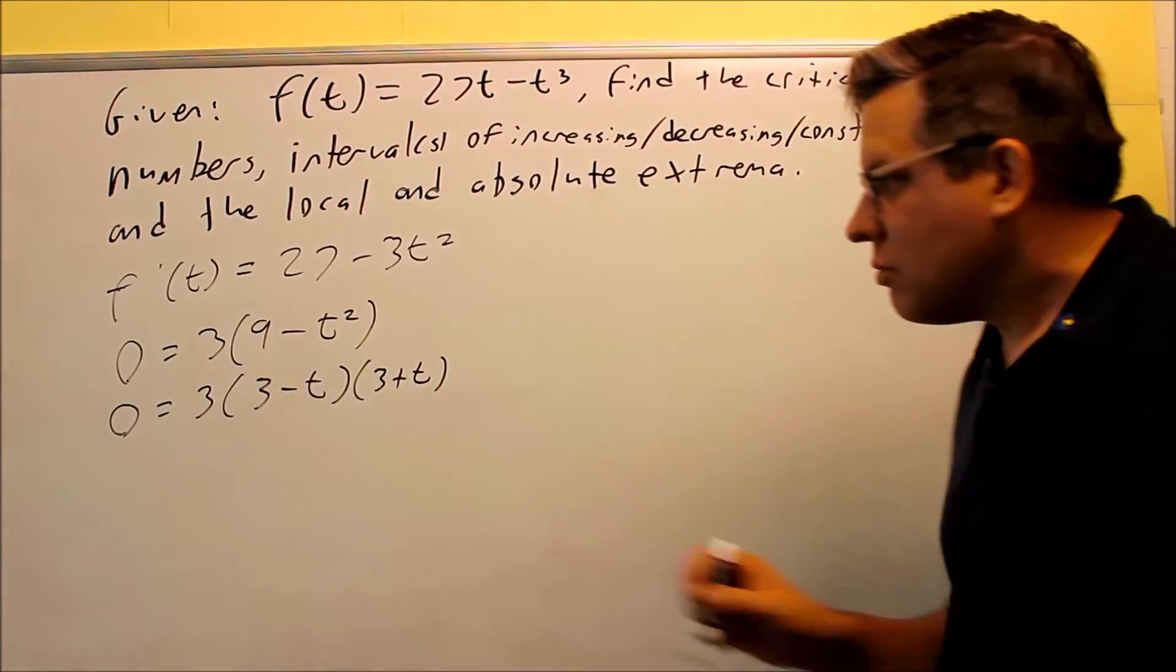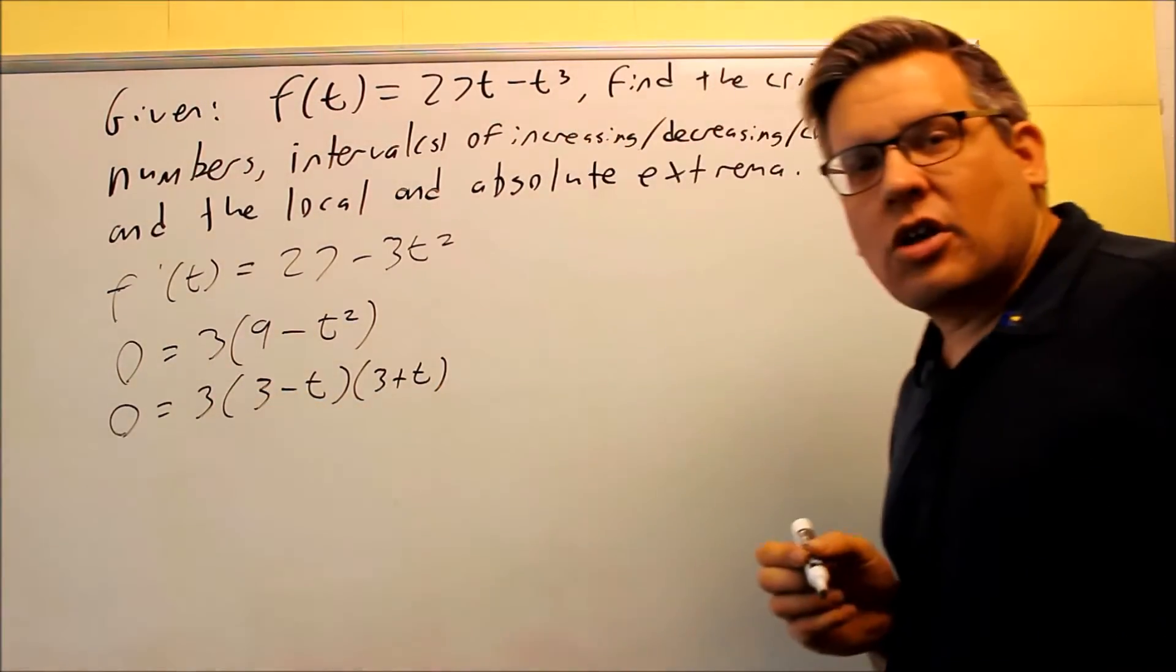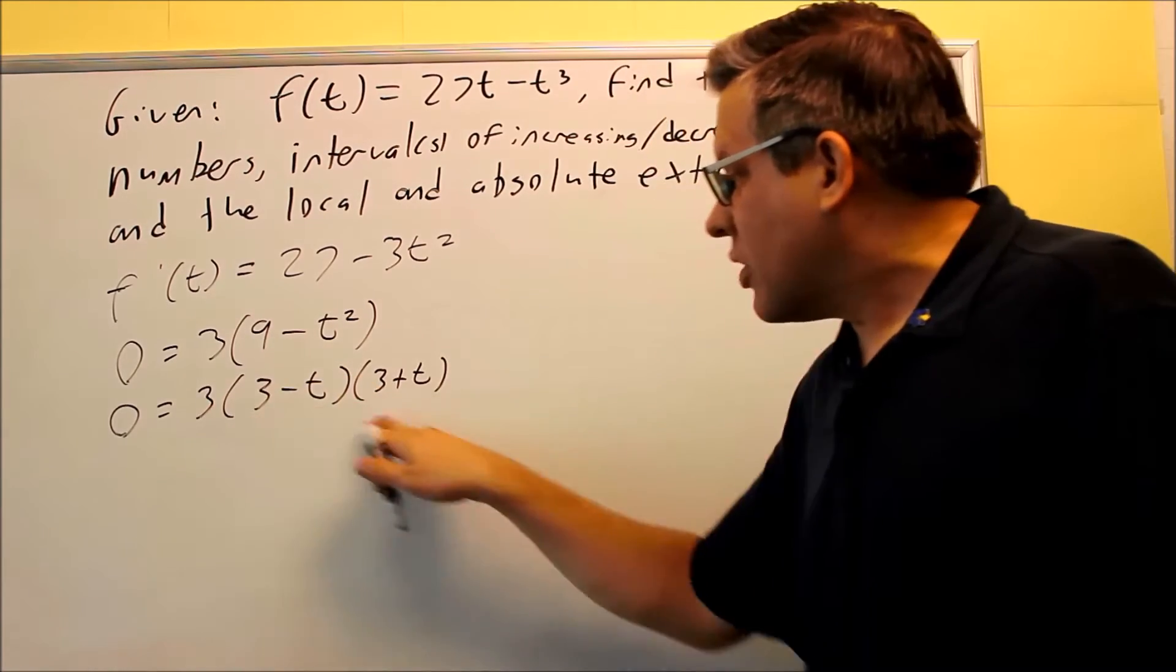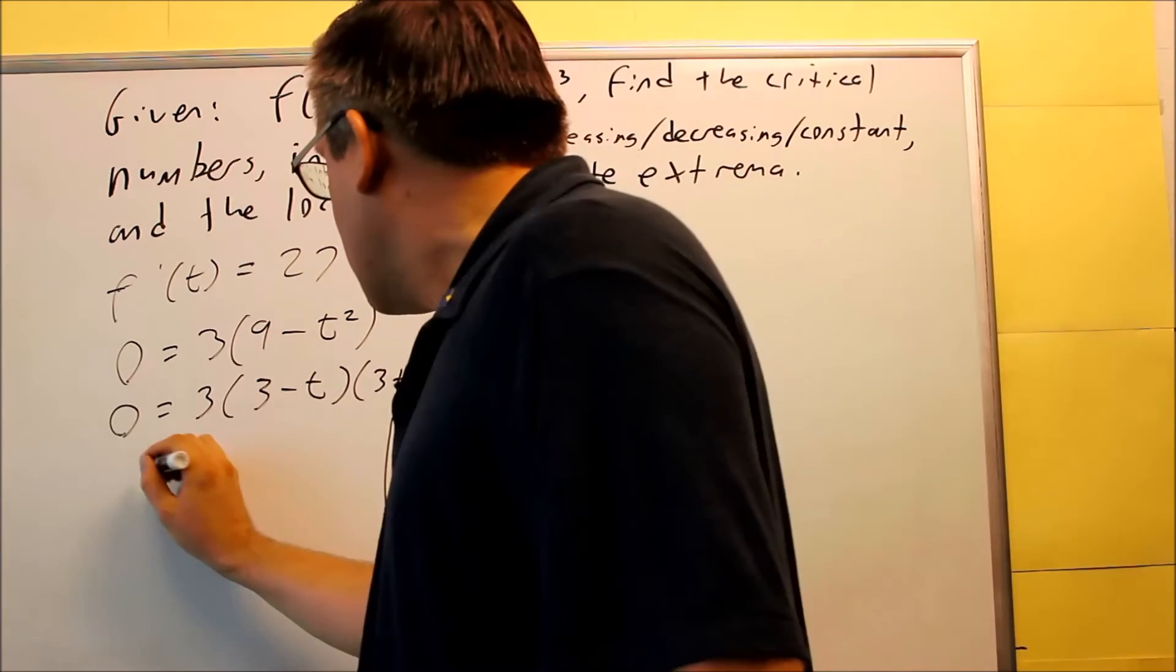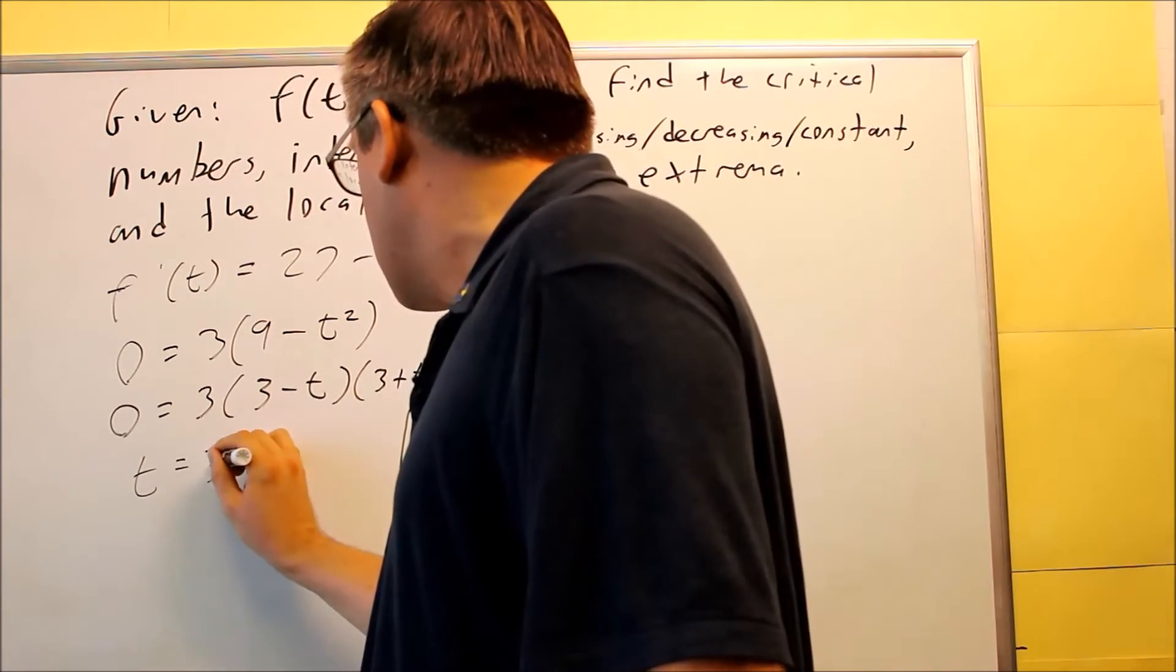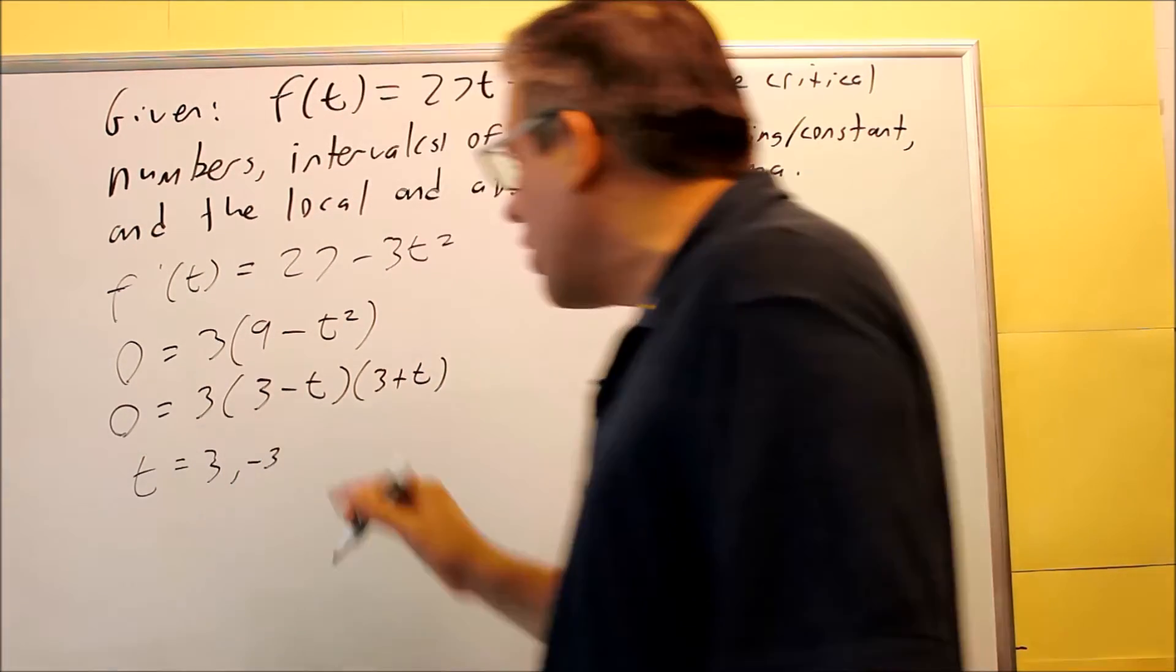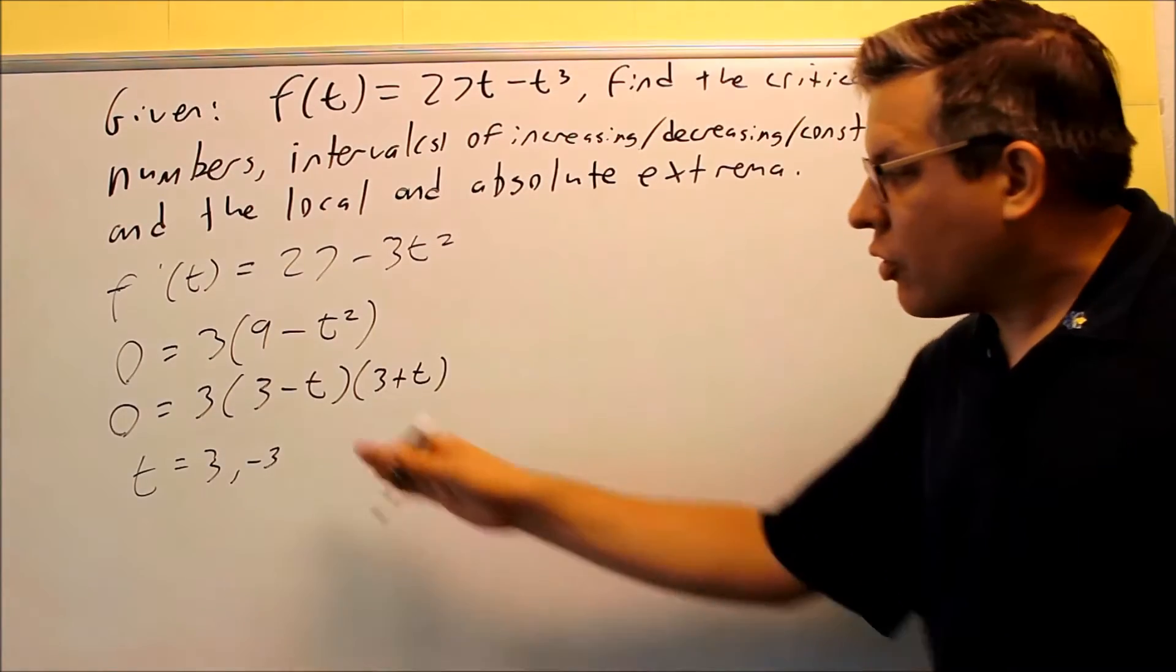Now we're going to set this equal to 0. You can't take 3 and set it equal to 0, so we can ignore that. We'll just take these two and set it equal. When you do, you're going to get t is equal to 3 and negative 3. 3 and negative 3 will be your critical numbers.